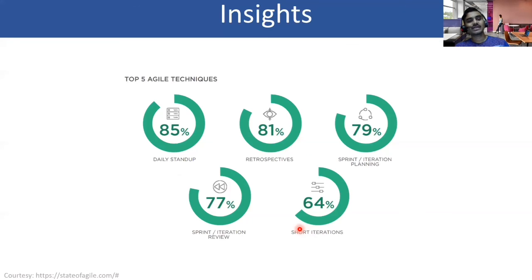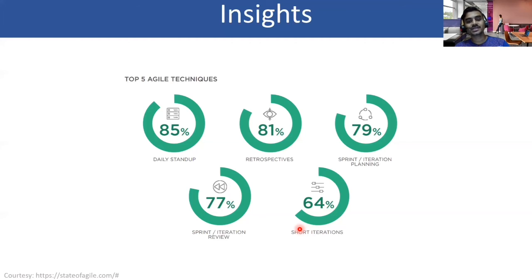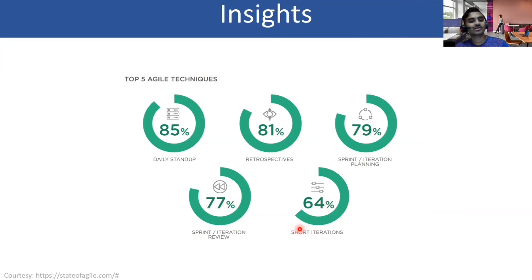The next insight is that these are the favorite activities teams using various methodologies are drawn to: daily standup, which comes from Scrum and a few other methodologies, is essentially a status update across team members. Retrospective — from my personal experience, one of the most important activities to have. It's about looking back at what went wrong, what went well, and what can be continued — start, stop, continue. Sprint and iteration planning covers what you plan for the next sprint. Iteration review is about what can be done for the next upcoming one, and short iteration length varies from market to market and business to business — there's no standard scale for it.